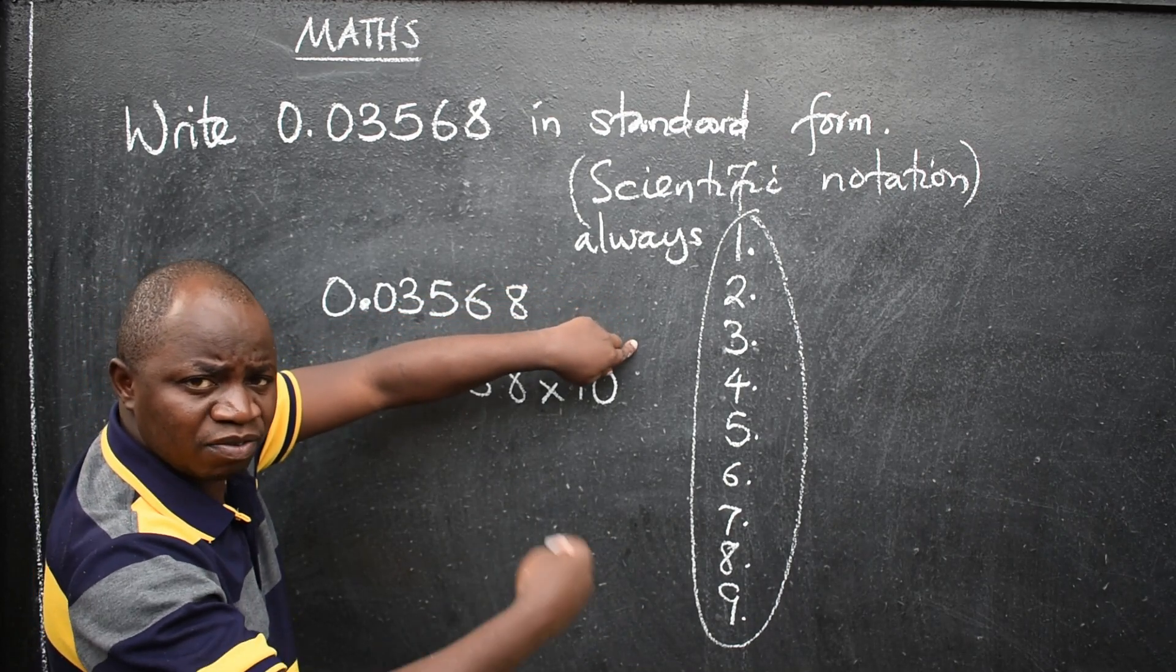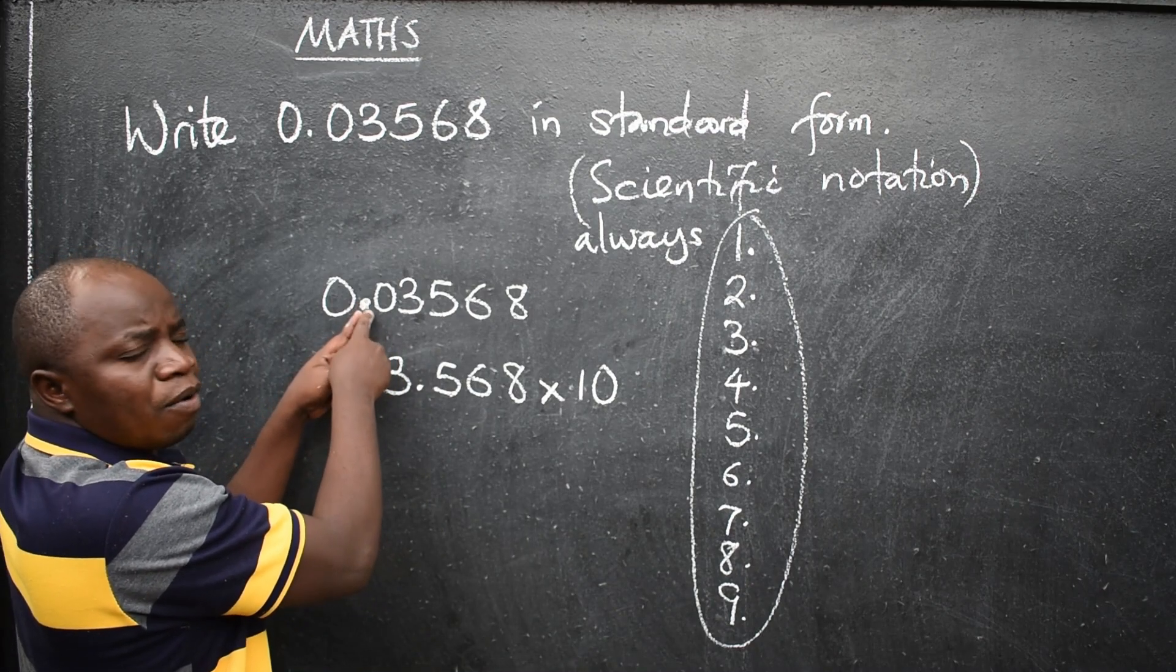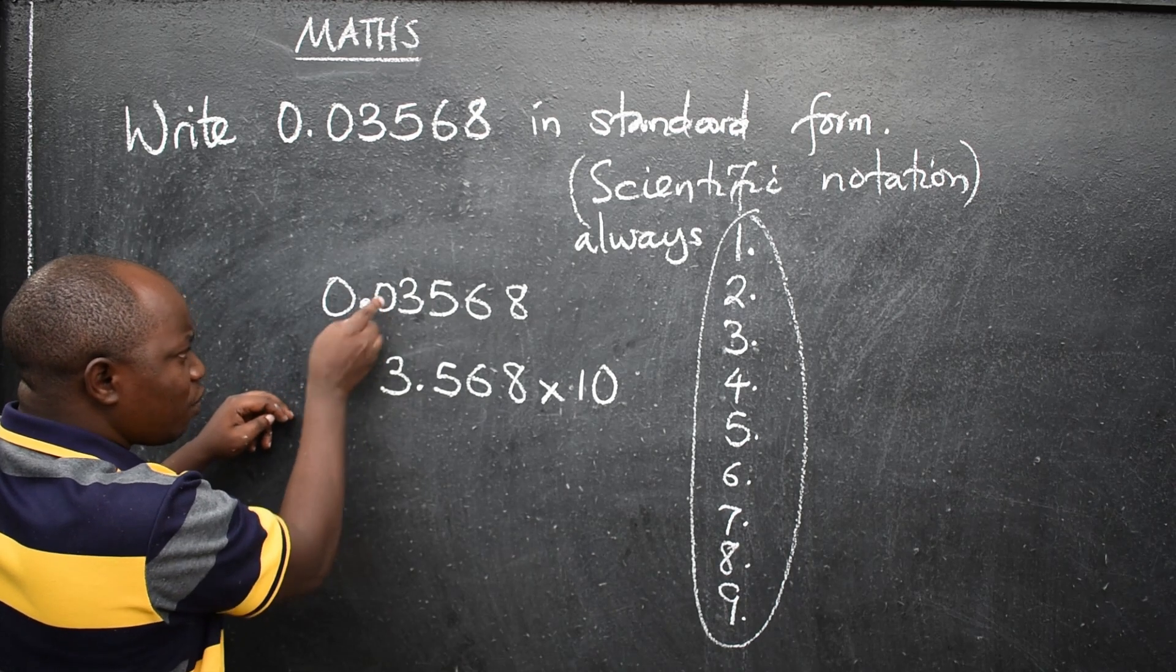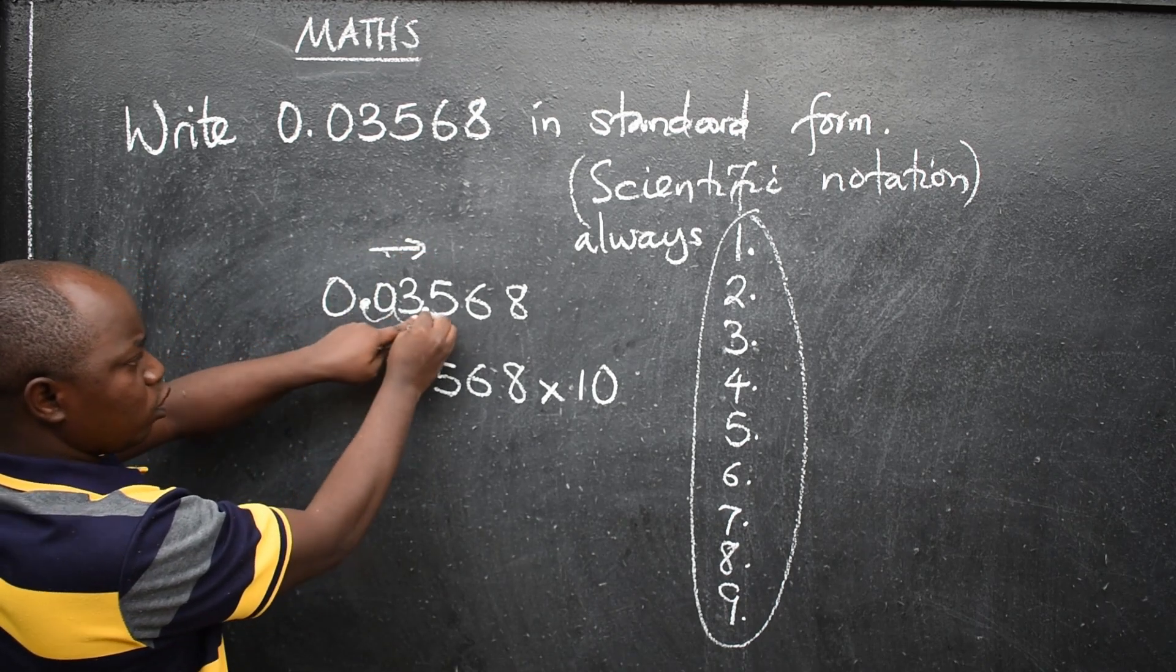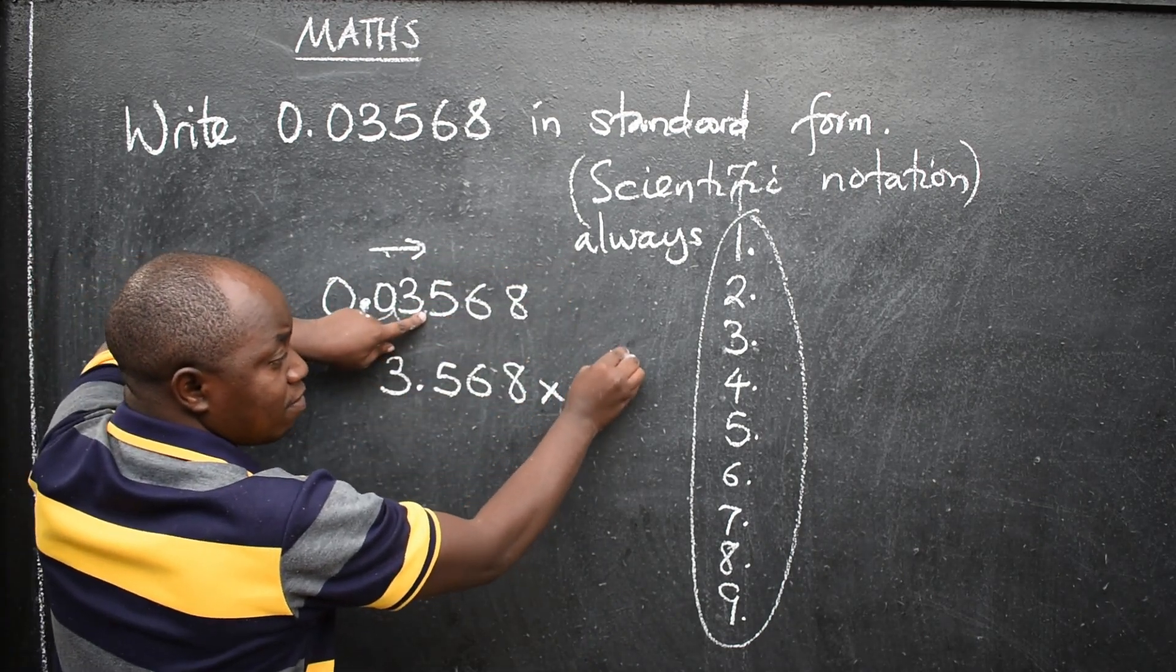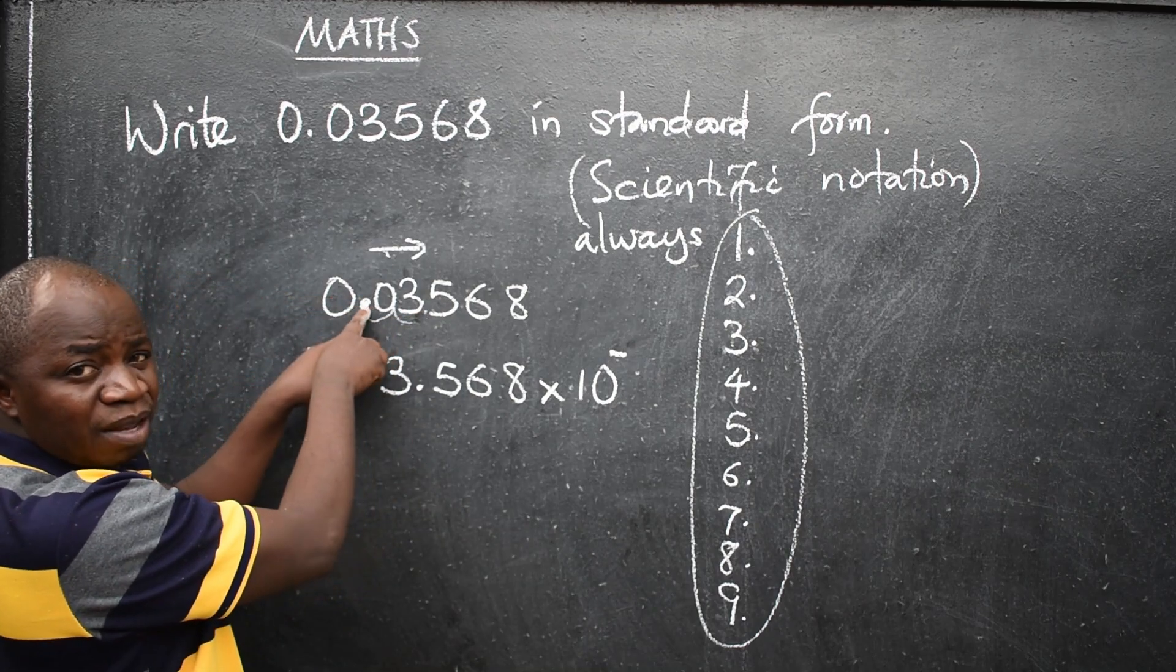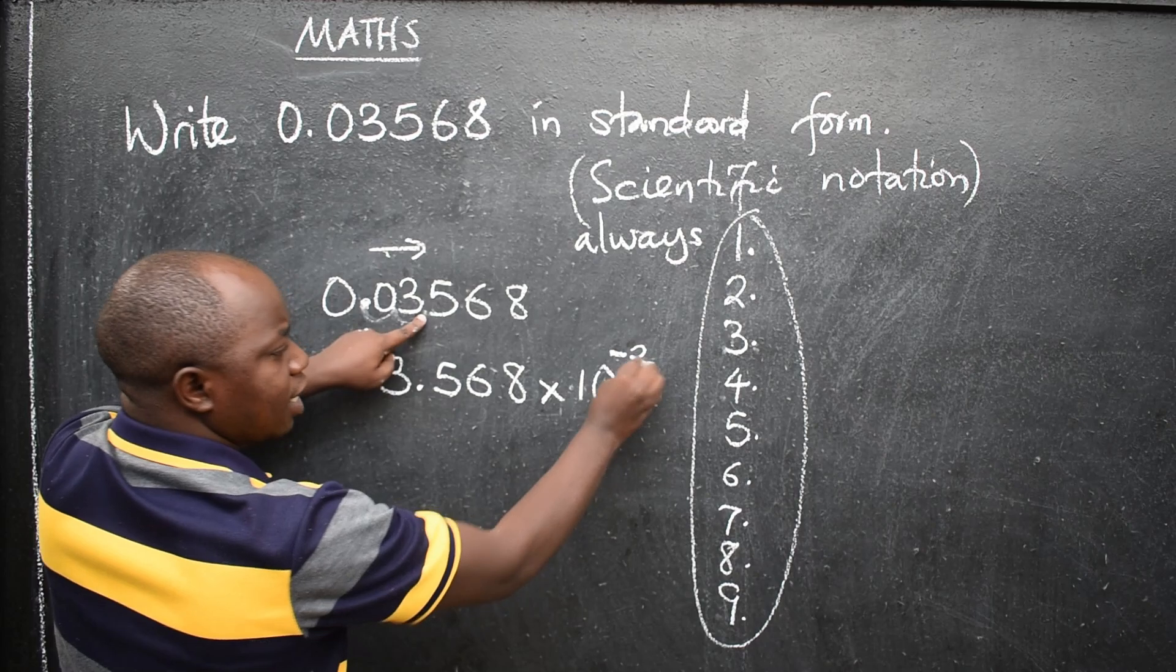How do you know whether it's positive or negative? It depends on the direction of the point, the way you are shifting. In this case, the point is here. We are shifting this direction, 1, 2 to be here. So if it is this direction, then it should be negative. Negative what? You count the number of times you are shifting. So it is 1, 2. So it will be negative 2.